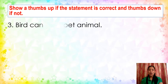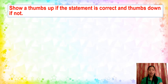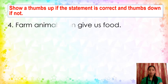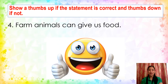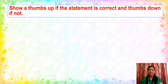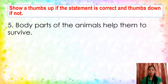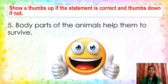Next: A bird can be a pet animal — that is thumbs up. Farm animals can give us food — that is thumbs up also.